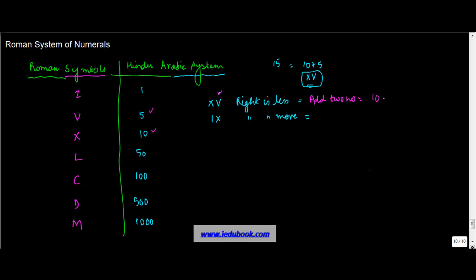So what you will do, X is 10 plus V is 5, is equal to 15. Whereas, when the number on the right is more, then you subtract number on left. Then you subtract from right to get the value of the number. So the number on the right is 10 minus, this is 1, equals 9.